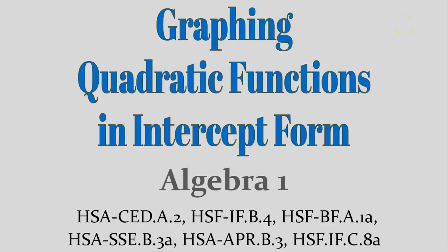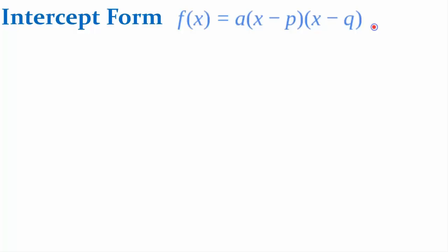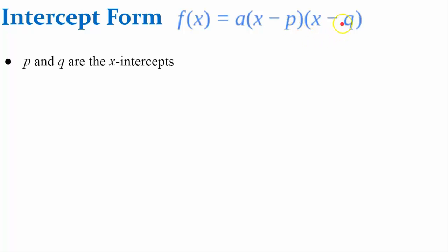Welcome to the lesson on graphing quadratic functions in intercept form. Intercept form is written f of x equals a times the quantity x minus p times the quantity x minus q. P and q are the x-intercepts, sometimes referred to as the roots of your quadratic function.